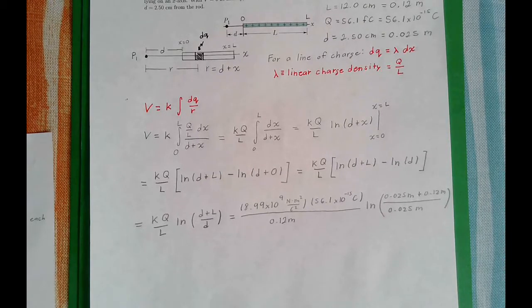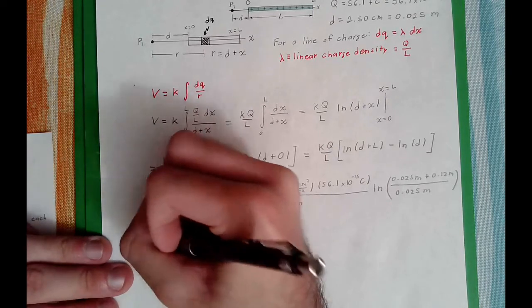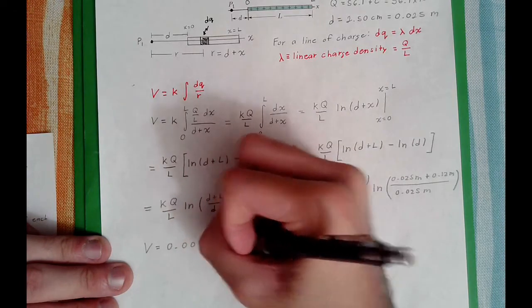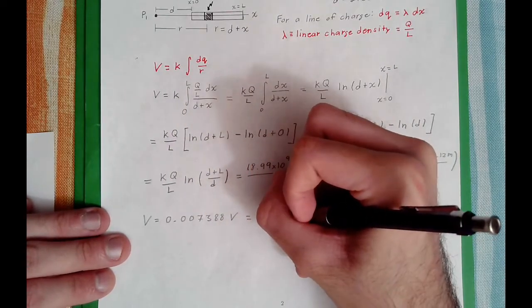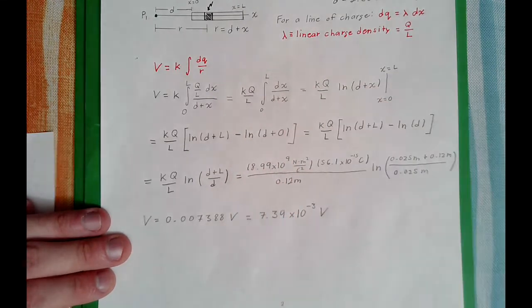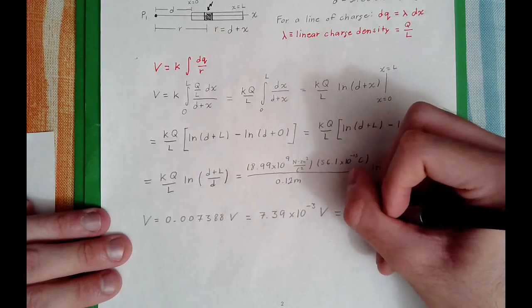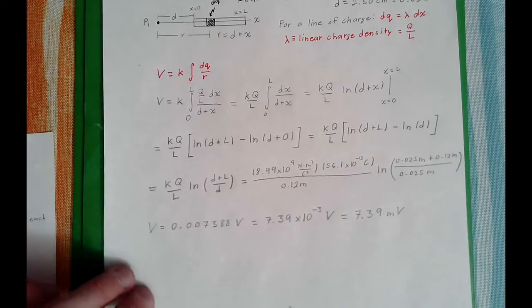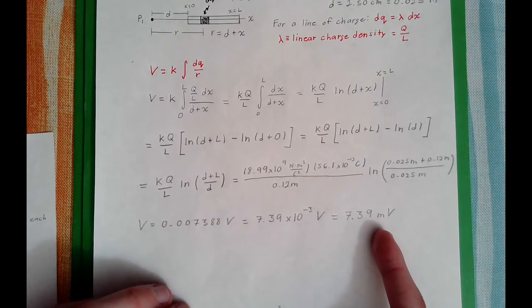So after plugging in those numbers and shoving them into your calculator, we find that the potential is 0.0007388 volts, which we can write in scientific notation as 7.39 times 10 to the minus 3 volts. I decided just to keep three significant figures in total. Or we can even, using prefixes, call this 7.39 millivolts. Whatever you prefer. Most of the time the answers are usually given with a prefix, such as millivolts. Scientific notation works just as well.